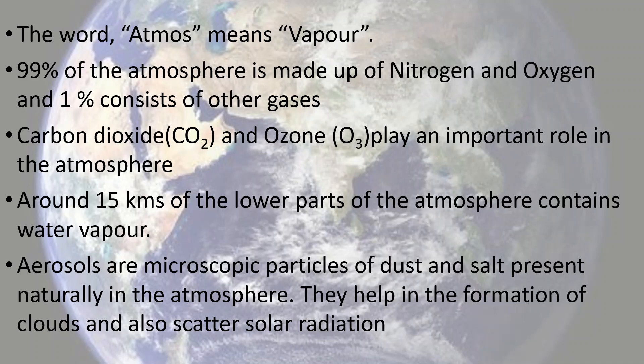Around the lower 15 kilometers of the atmosphere contains water vapor, which is made by evaporation and transpiration from vegetation and different water bodies. The atmosphere also has dust and salt — very tiny microscopic particles known as aerosols. They help in the formation of clouds and scatter solar radiation, which is also why our sky appears blue.